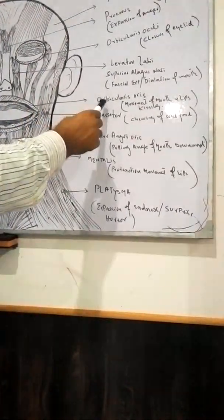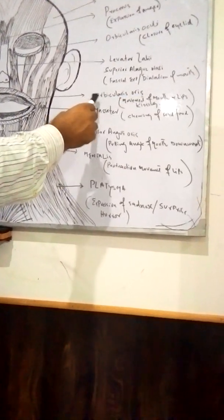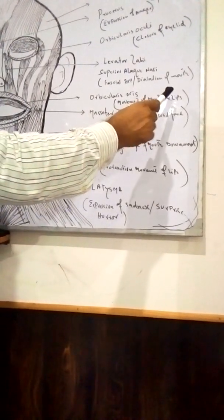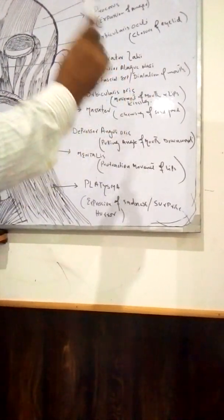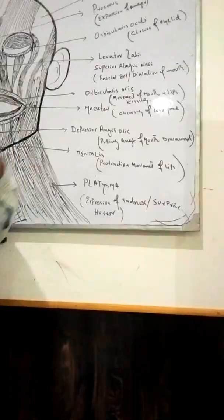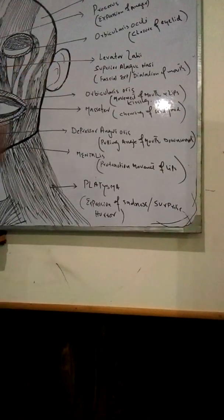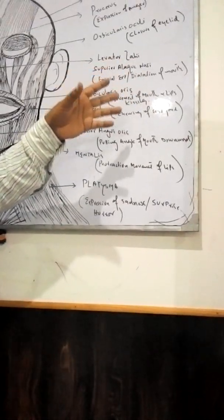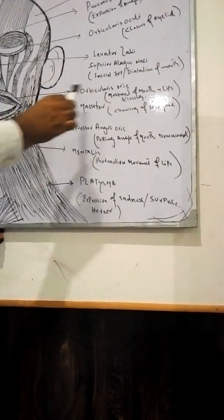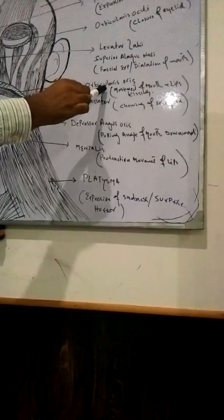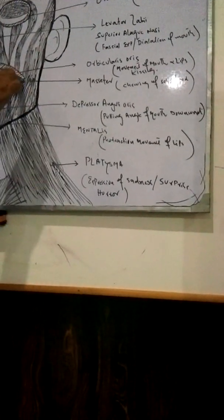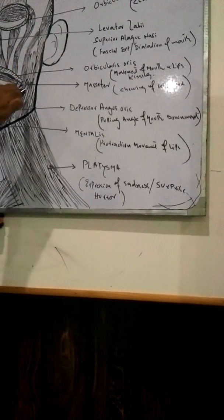The next muscle near the lip is called orbicularis oris. The orbicularis oris muscle helps in the movement of the mouth and lips, and also helps in kissing. The upper lip and lower lip are both connected by this muscle, and it helps in all lip movements including kissing.